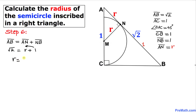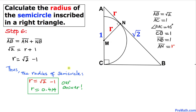Solving for r, we move the 1 to the other side: r = √2 − 1. Thus, the radius of this semicircle is r = √2 − 1, which is approximately 0.414. That is our final answer. Thanks for watching, and please don't forget to subscribe to my channel for more exciting videos!